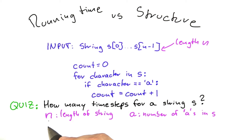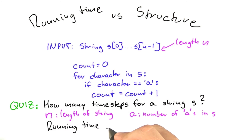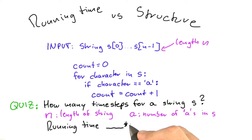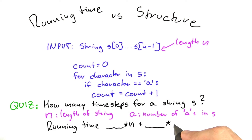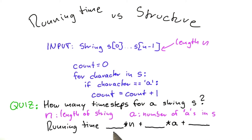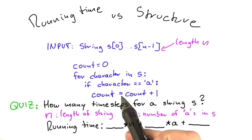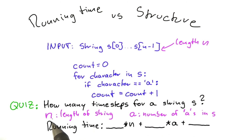I would like you to give me the running time by entering the coefficients in the following formula: it's going to be some number multiplied by n, plus some number multiplied by a, plus a constant. Please enter those three numbers so that the resulting formula gives the running time of this algorithm when it encounters a string of length n where the letter 'a' occurs exactly a times.